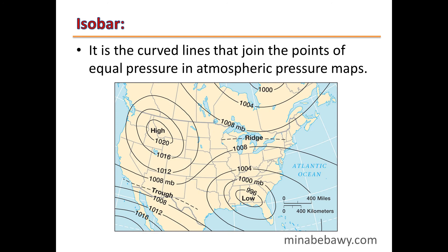An isobar is a curved line that joins points of equal pressure on atmospheric pressure maps. These maps contain curves where each curve joins areas with equal atmospheric pressure. For example, all points on one curve share a pressure of 1012 mb, and all points on another share 1008 mb, and so on.